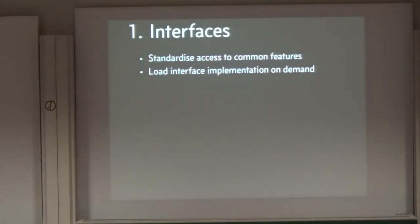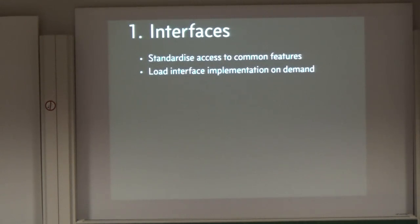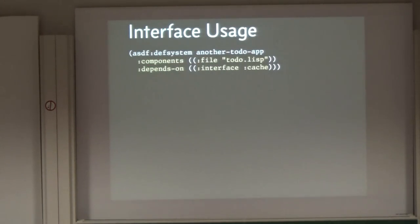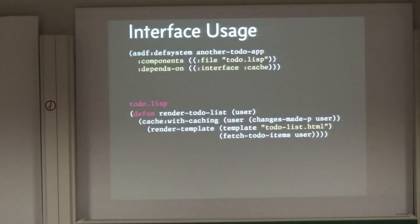The first problem led me to a solution I call interfaces, which is the idea of standardizing access to common features in the framework. Instead of providing features directly from the framework, I specify an interface that defines what it looks like and what kind of definitions you have, and then you can load an implementation of this interface on demand. Here's an example definition of the cache interface: caching has just one function — invalidate cache — and a macro which allows you to cache its return value. Once you have this interface definition in an application, you can start using it via an ASDF extension that lets you specify your dependencies on an interface called cache, without specifying a specific implementation — that's resolved later when you actually load the system.